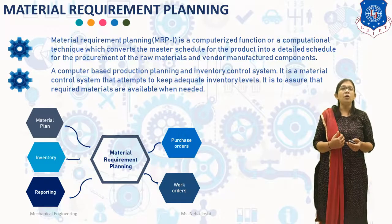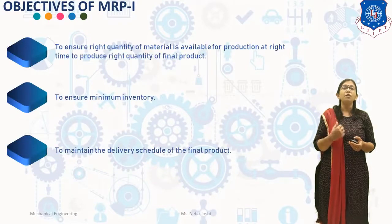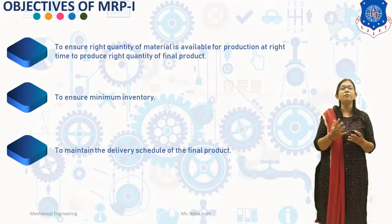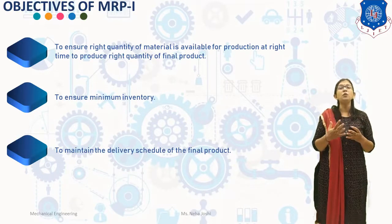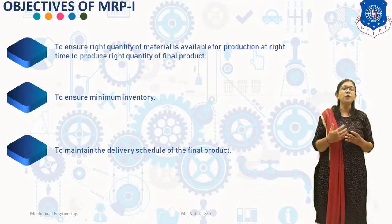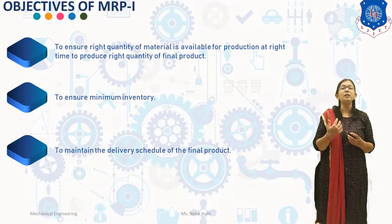What are the objectives of MRP-1? The first objective is to ensure the right quantity of material is available for production at the right time to produce the right quantity of the final product. The second objective is to ensure minimum inventory. And the last objective of MRP-1 is to maintain the delivery schedule of the final product.